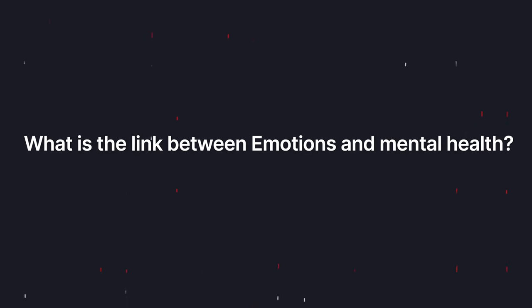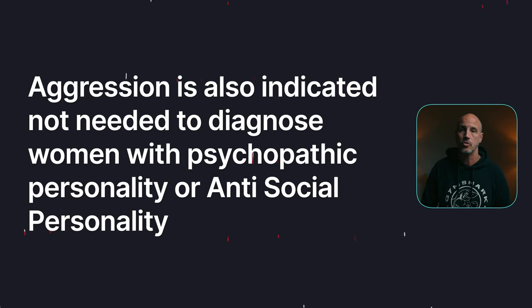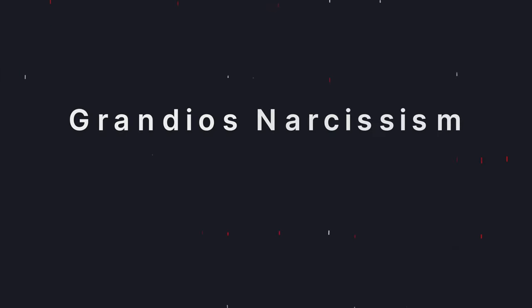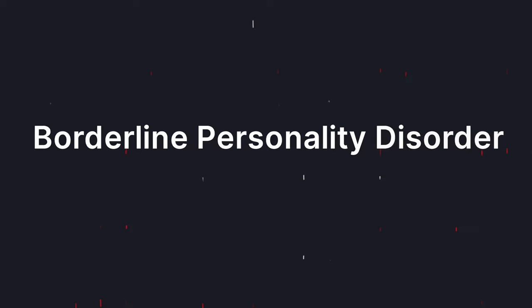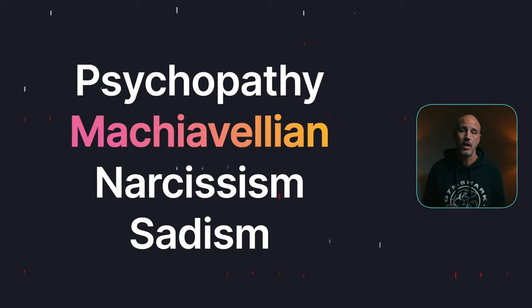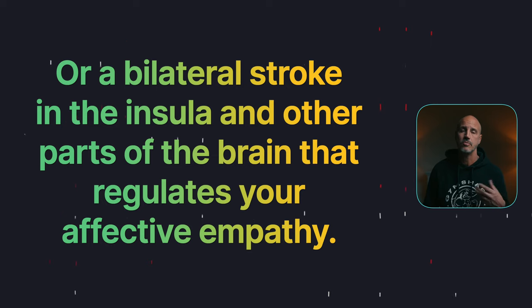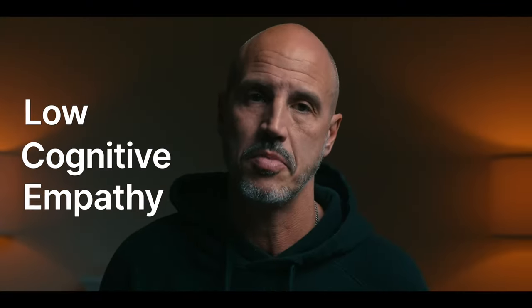What is the link between emotion and mental health? Aggression, anger, and low affective empathy are linked to psychopathy in men and women. High unhappiness may lead to manic episodes and, together with neuroticism or emotionality, may become bipolar disorder. Some combinations can lead to grandiose narcissism and vulnerable narcissism. Being too high in neuroticism and emotionality runs the risk of becoming borderline personality disorder. Low affective empathy can indicate psychopathy, Machiavellianism, narcissism, or sadism — which can be something you were born with, or happen through sexual abuse during childhood or a bilateral stroke in the insula.